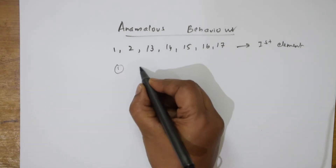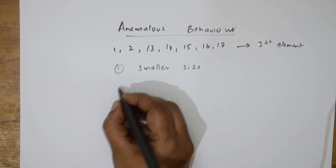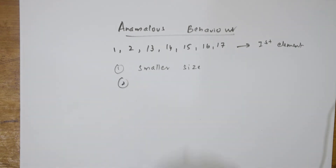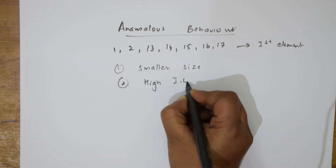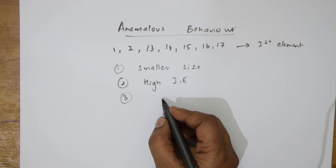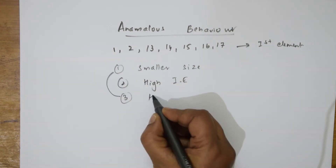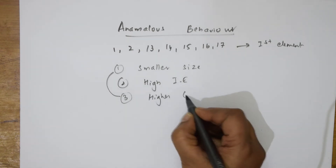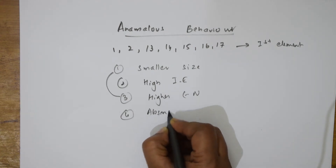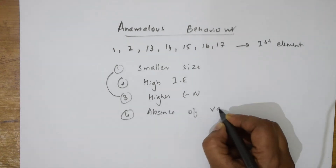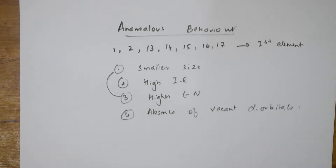Why do they show anomalous behavior? The first concept is smaller size. If the size is smaller, it's very difficult to remove electrons, so ionization enthalpy is very high. When ionization enthalpy is very high, that means the element has higher electronegativity. The next important concept is the absence of d-orbitals or vacant d-orbitals. These are the reasons why first elements of each group show anomalous behavior.